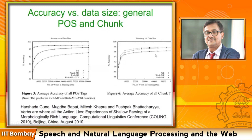Similar is the case for chunking, which is shallow parsing — a much easier problem. The chunking curve begins almost at 90% accuracy and reaches about 98% with a small amount of data; even 40,000 words is sufficient. We exploited the nice morphological property of Marathi. If it were English, we would not have had that advantage because English morphology is weak. If the morphological situation is rich, why not use it?